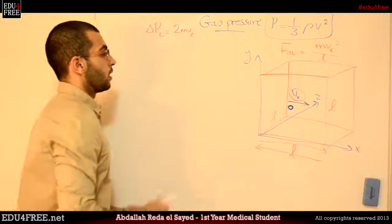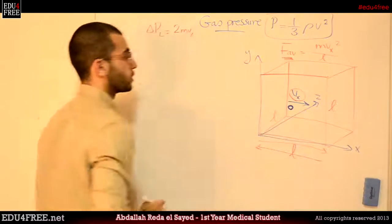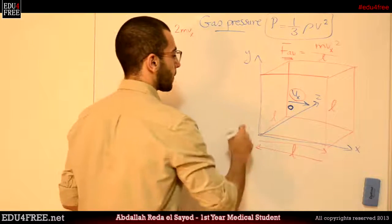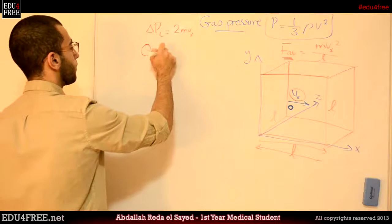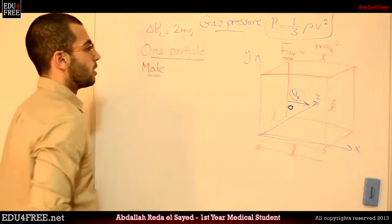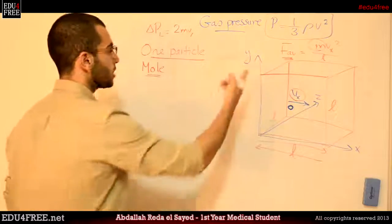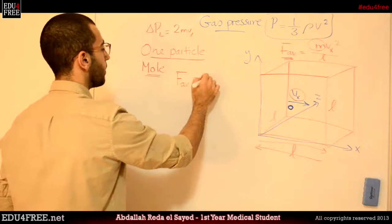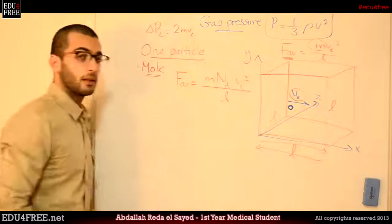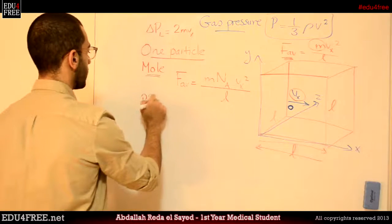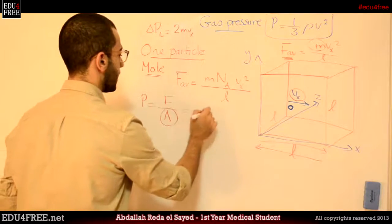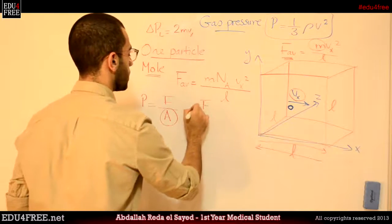Now the final part. As this is for just one particle, we want to calculate it for a mole. To account for the whole mass, the average force equals the molecular mass multiplied by Avogadro's number, multiplied by Vx squared, divided by L. And as we know, pressure equals force over area. The area here equals L squared, so the pressure equals the force over L squared.